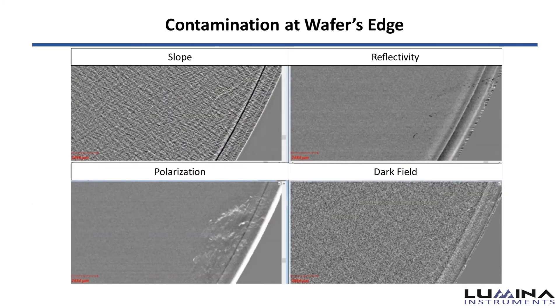Contamination defects such as stains have a strong signal in the polarization channel as well, but can also be seen by the other detectors.